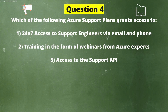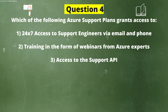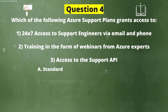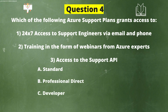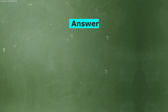Next question. Which of the following Azure support plans grants access to: 1) 24/7 access to support engineers via email and phone, 2) Training in the form of webinars from Azure experts, and 3) Access to the support API? Option A: Standard. Option B: Professional Direct. Option C: Developer. Option D: Basic. The correct answer is Option B — Professional Direct.